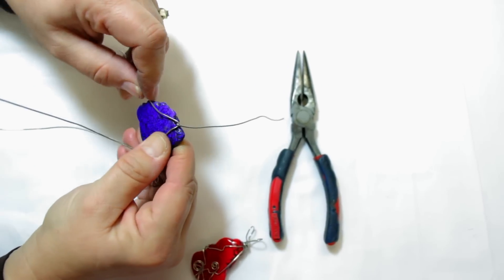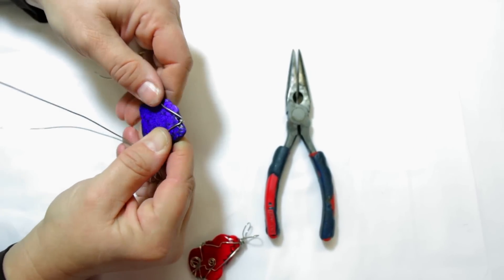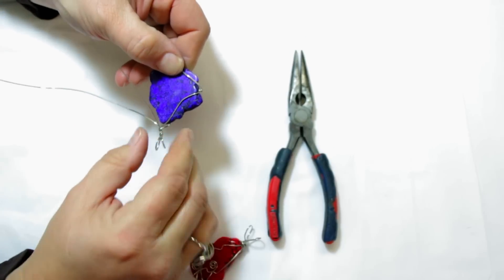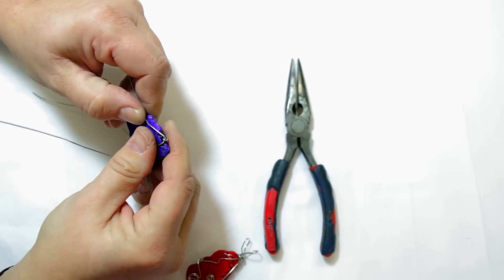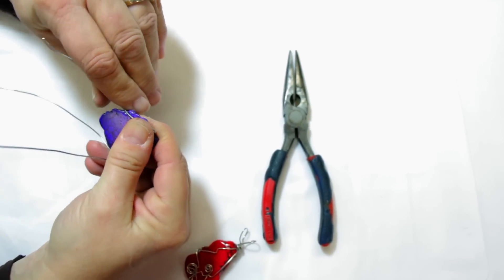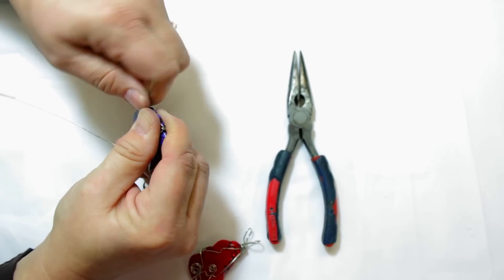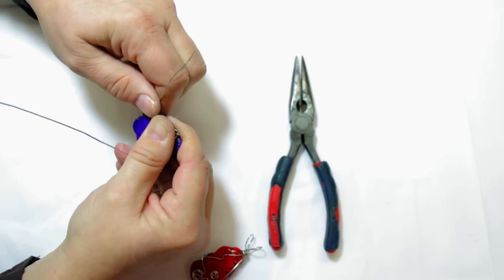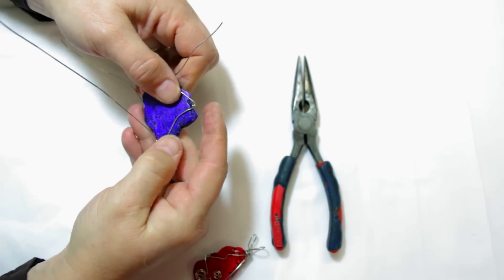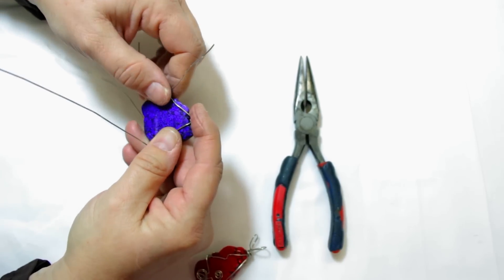And then we take this and we follow it along the stone to a bottom point. So that's parallel from the top. And we're going to do the same thing with that same piece of wire. Make two twists. One, two. Okay? So now we have this side of the stone partially in.